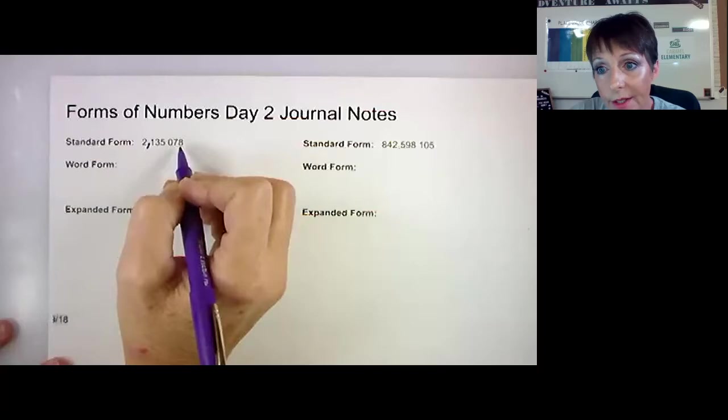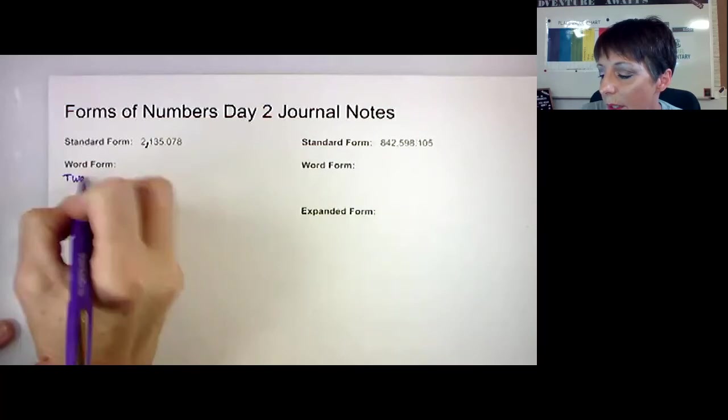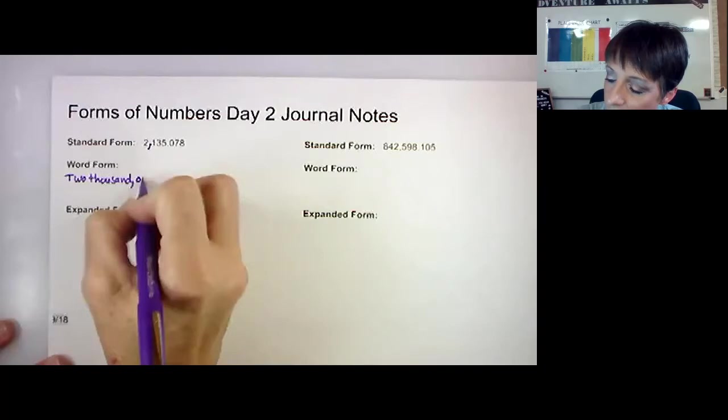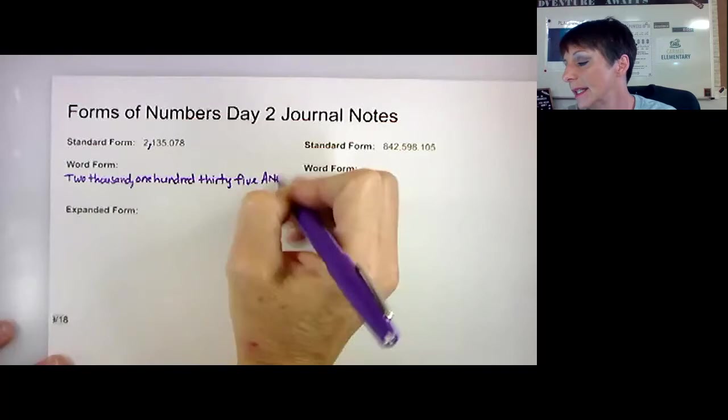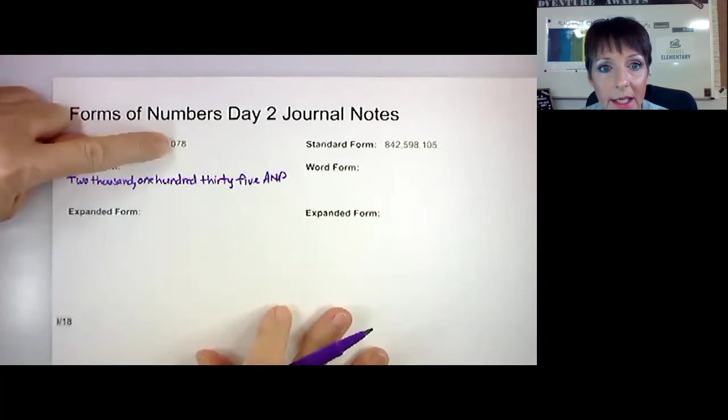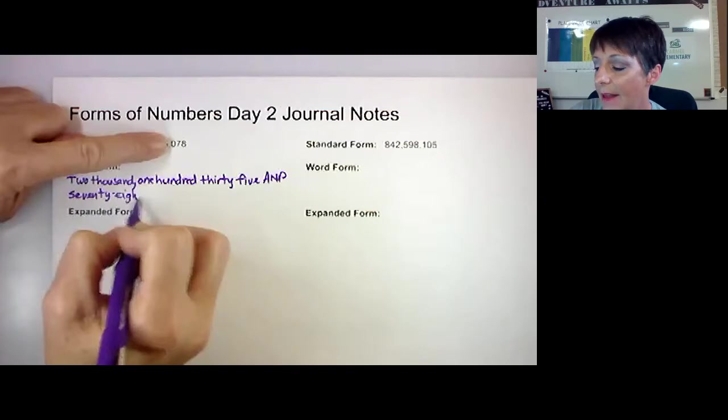And this lands in the thousandths place, so that's why we end with the word thousandths. Let's try to write it. Two thousand, and I see a comma, so I'm putting a comma, 135. And remember, if I'm writing, you're writing. The decimal means the word 'and', so 'and'. And then if I cover up before the decimal, how would you say that number? You would say 78, right? So we're writing 78.